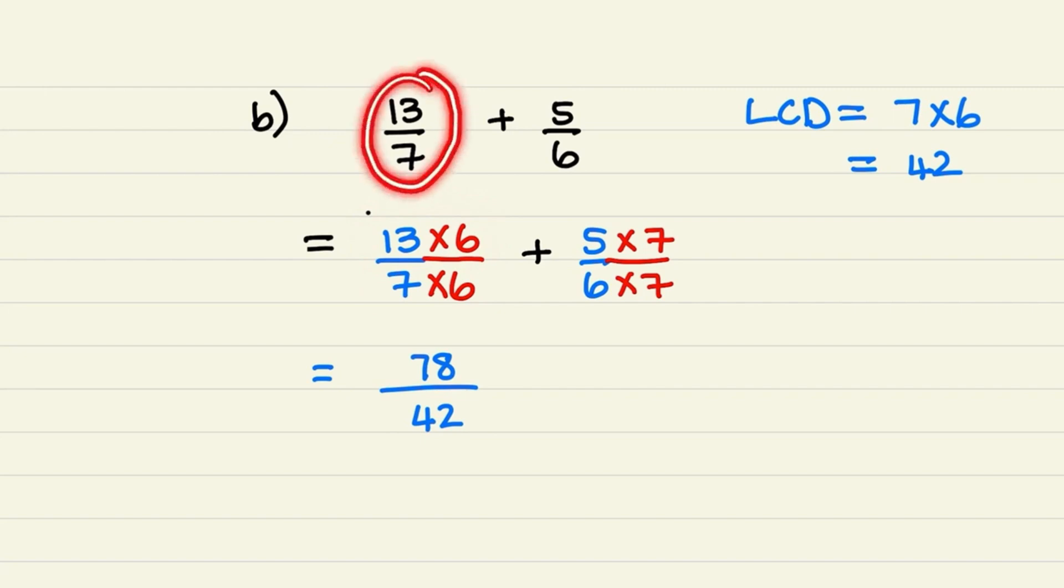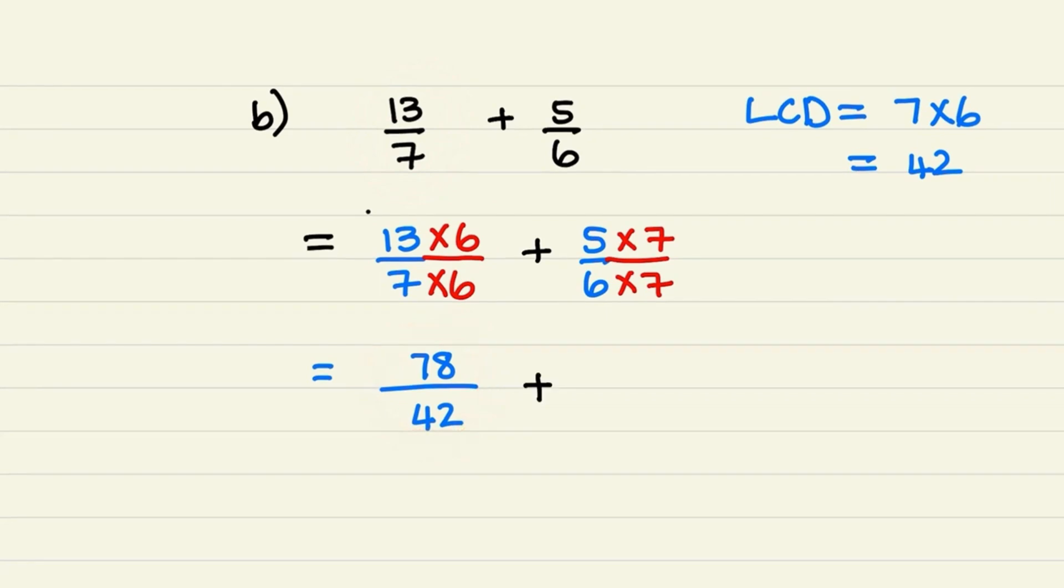So 13 over 7 is equal to 78 over 42. Then for the second fraction, 6 times 7 is equal to 42. And 5 times 7 is equal to 35. That means that 5 over 6 is equal to 35 over 42.